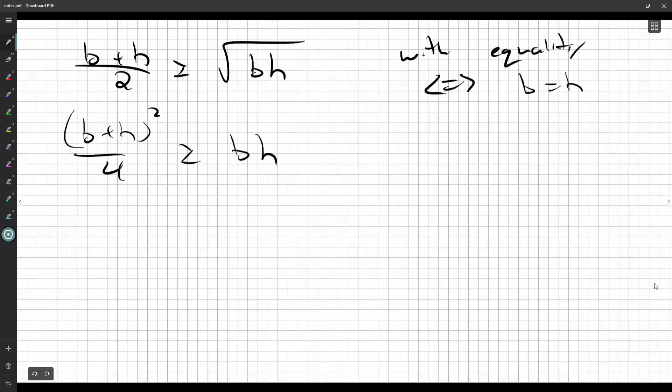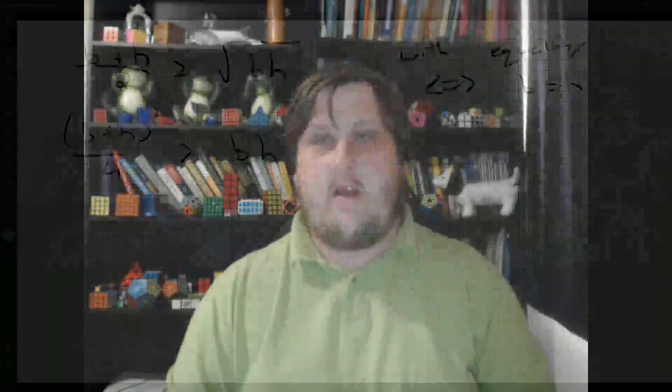Alright. Now, I said arithmetic mean geometric mean earlier. And if you're not familiar with that, it's (b+h)/2 is greater than or equal to the square root of bh. This one here is the arithmetic mean. This is the regular old average. This is what's called the geometric mean. Or some people have called this the multiplicative average. If I do that, then the bh, you can square both sides, sure. But then you're putting sort of a cap on the bh.